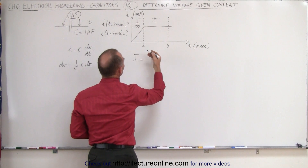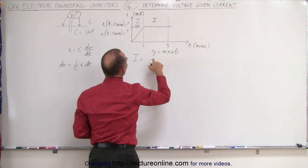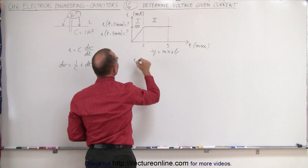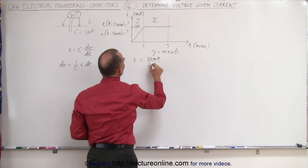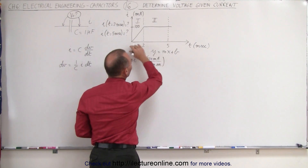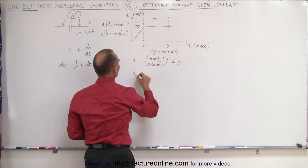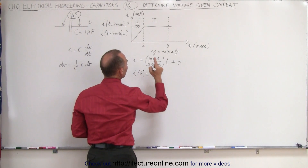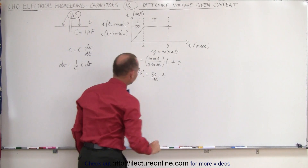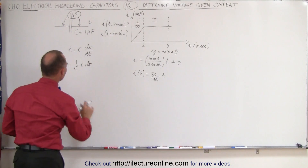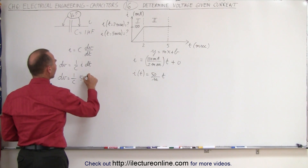For region 1 the current equation looks like a linear equation, y = mx + b. Here i is equal to the slope — the rise over the run — which is 100 milliamps divided by 2 milliseconds, multiplied by time, plus 0, because it starts at the origin. So the current as a function of time equals 50 milliamps per millisecond times T. That goes into our dV equation, giving us dV = 1 over C times 50T dT.